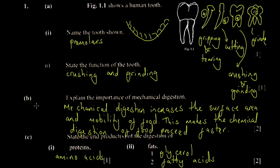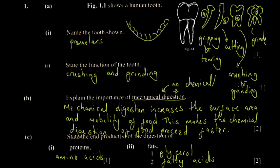On the b part, you're asked to explain the importance of mechanical digestion. You're expected to know the definition: mechanical digestion is the breaking of food into smaller pieces without any chemical or enzyme action. This includes mastication and chewing, which are essentially the same thing.